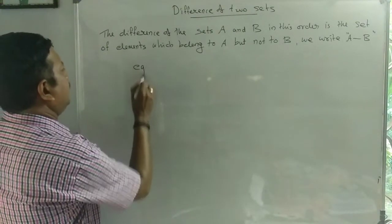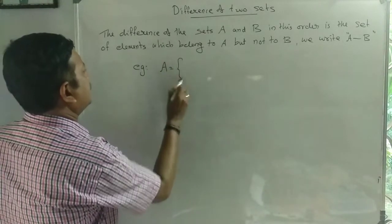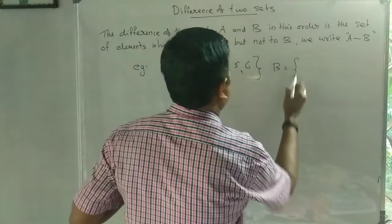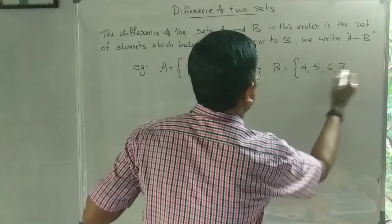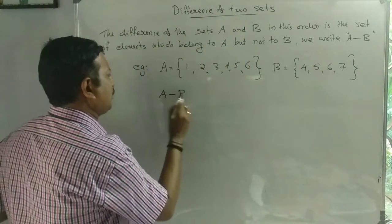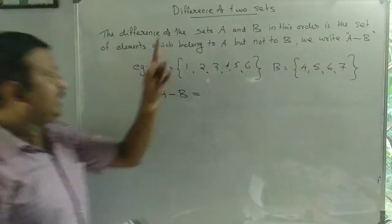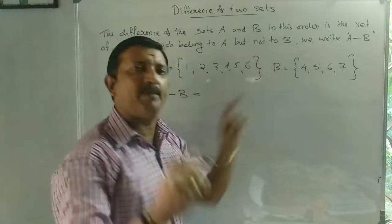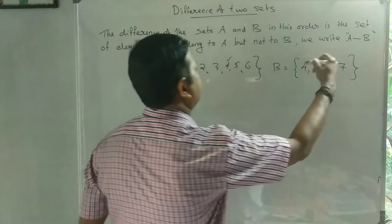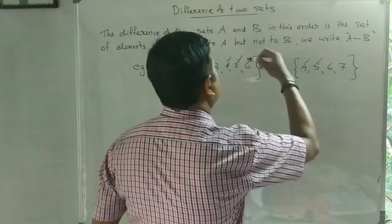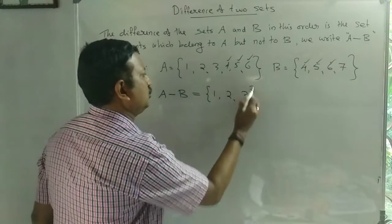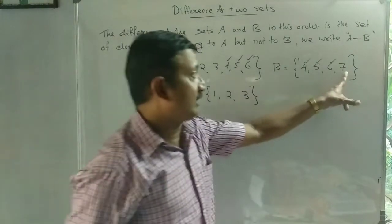For example, A is equal to {1, 2, 3, 4, 5, 6}. B is equal to {4, 5, 6, 7}. Two sets. The result is 1, 2, 3. Now here is 7 — it is 7, 7 is here.